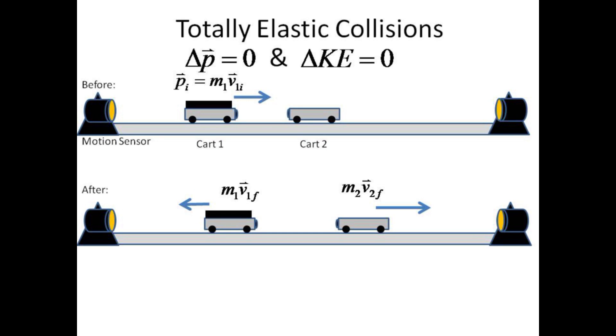Here a loaded cart 1 enters the collision with momentum. After the collision, cart 1 backs away slowly, and the lightweight cart 2 takes off in the forward direction. The initial momentum should equal the final momentum. For the final momentum, pay particular attention to the signs, where cart 1 has a negative final velocity and cart 2 a positive final velocity.